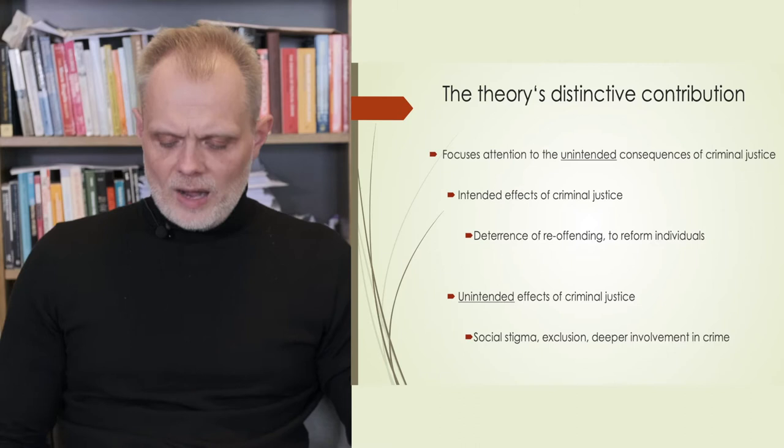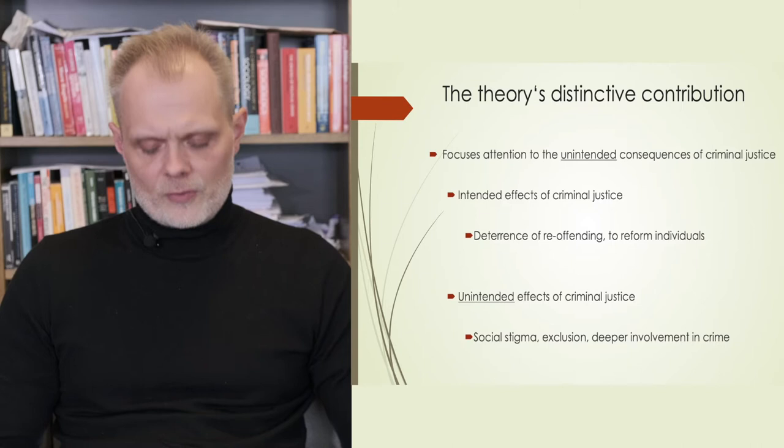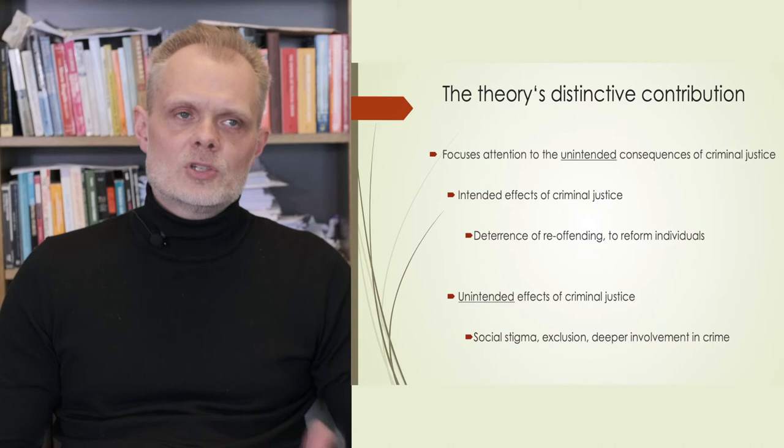The argument of labeling theory goes that the unintended effects of criminal justice labeling include social stigma, social exclusion, and deeper involvement in crime.